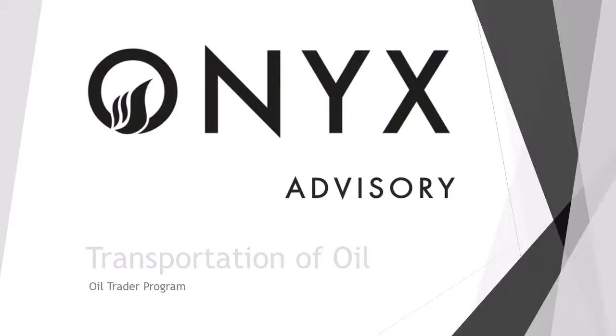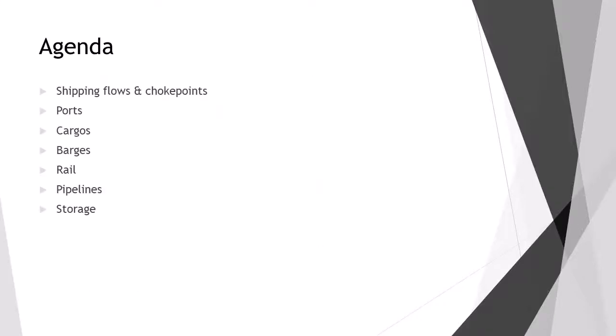Hello and welcome to the Transportation of Oil lecture. We're going to go through how oil is transported around the world, starting with the shipping flows of transporting cargoes, the key choke points in the world, oil ports and which are the key ones, the cargoes themselves and the ship names that can accommodate different cargo and parcel sizes, barges which are used on rivers, rail, pipelines, and finally storage.